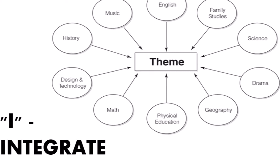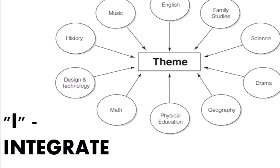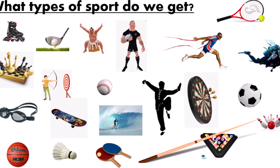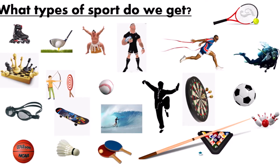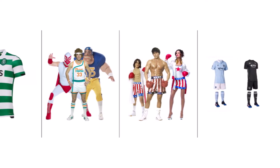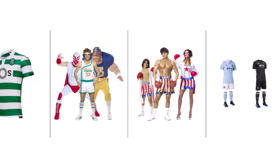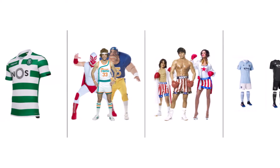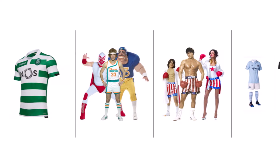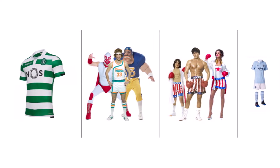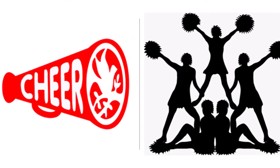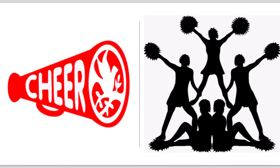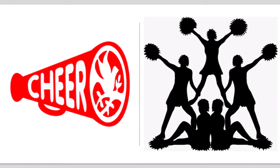Students will then be taught the different types of sport. From there, you can take the sport lesson and change it into an art lesson. To do that, we can look at the different types of clothing sportsmen wear for their specific sport, and students can design their own clothing for the sport they choose. Or we can look at who attends sporting events — spectators and cheerleaders.